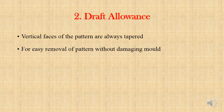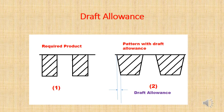The next type of pattern allowance is draft allowance. This is to reduce the chances of damage to the mold cavity at the time of pattern removal. The vertical faces of the pattern are always tapered. After casting, that portion is machined to get the final vertical face.